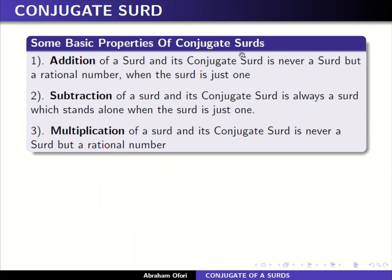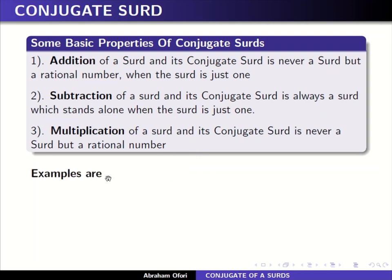Now some basic properties of conjugate surds. First, the addition of a surd and its conjugate surd is never a surd but a rational number, when there is only one surd present. Second, the subtraction of a surd and its conjugate surd is always a surd which stands alone — even if there are two surds, you just get one surd that stands alone. Third, the multiplication of a surd and its conjugate is also never a surd but a rational number, whether the surd is one or two terms.